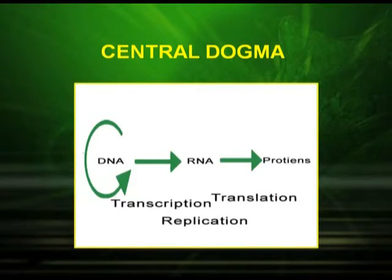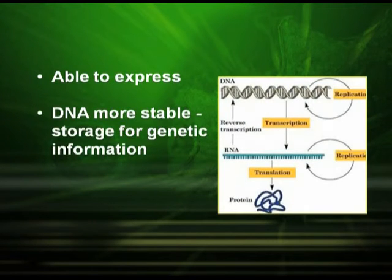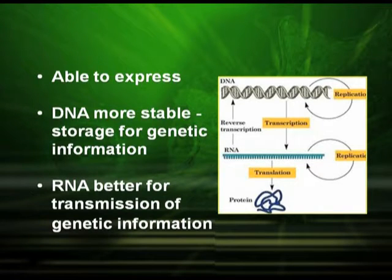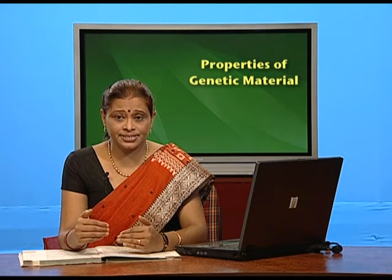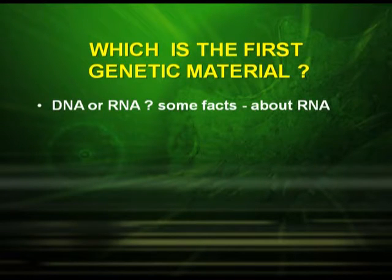Going back to the central dogma, DNA forms RNA and RNA forms protein. The messages coded in the DNA are transcribed into RNA and the RNA messages are translated into protein. Since DNA is more stable, it is preferred for the storage of genetic information. On the other hand, RNA is better for transmission of genetic information. A very important question arises: which is the first genetic material — DNA or RNA?